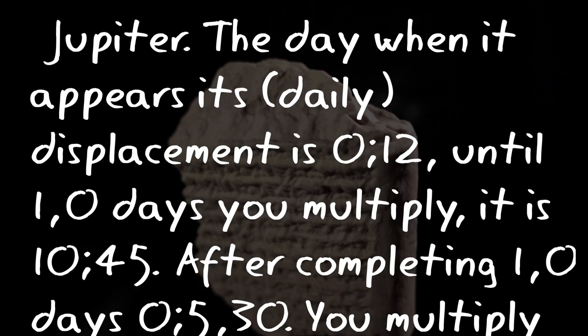Sometime between 350 and 50 BCE, Babylonian astronomers used sophisticated geometry to track the motion of Jupiter, 14 centuries earlier than when historians had first thought such techniques were developed.